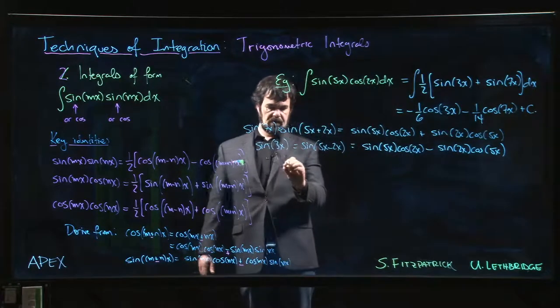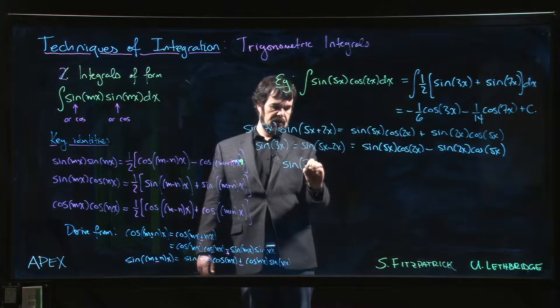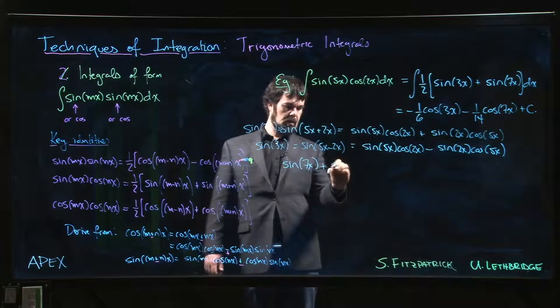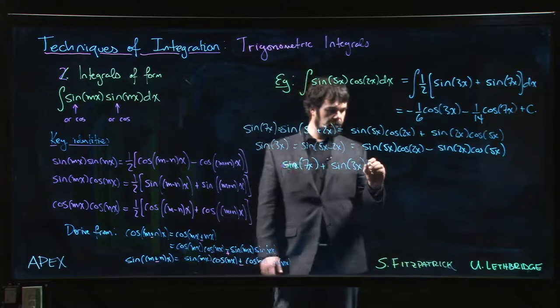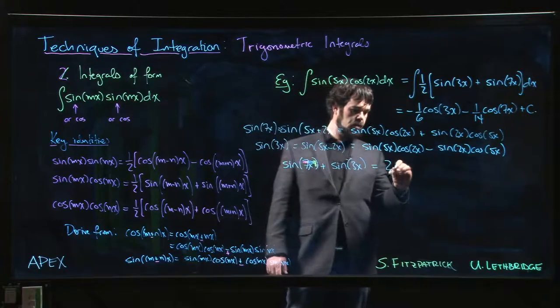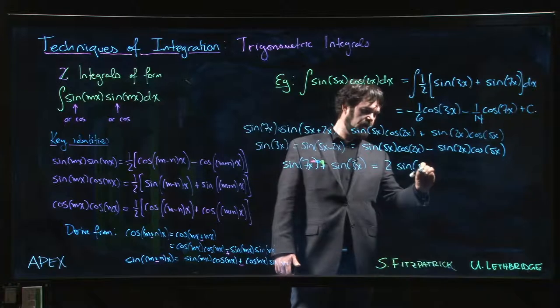Because these have opposite signs, they're going to cancel. So what you get is that sine of 7x plus sine of 3x is equal to 2 sine 5x...